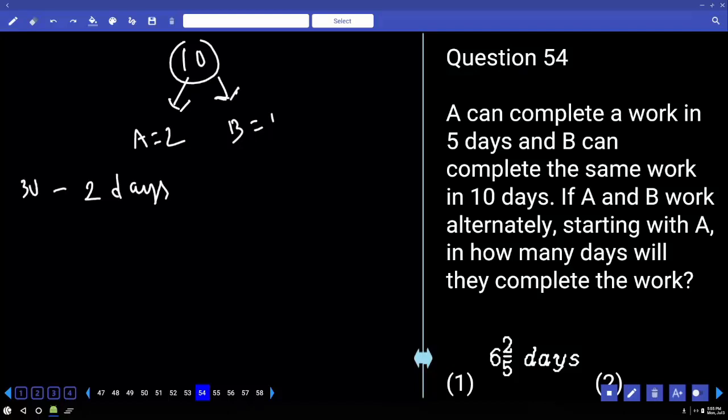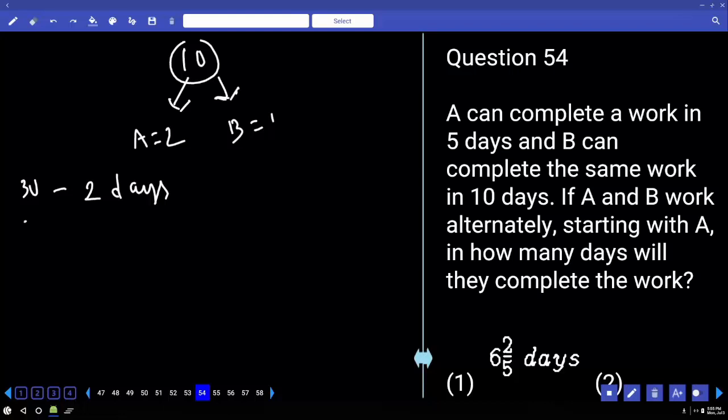So, all 3 units are completed in 2 days. Then 6 units are completed in 4 days. And 9 units are completed in 6 days. And just 1 unit is remaining. And this 1 unit has to be done on 10th day. By whom? A. A capacity is 2 units per day. Therefore, in half day, he can able to finish this 1 unit of the work. So, answer is 6 and a half days.